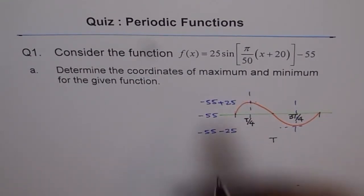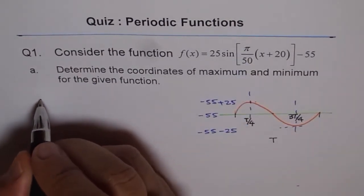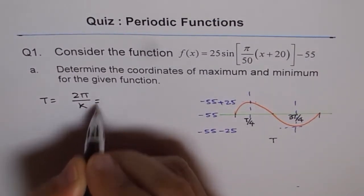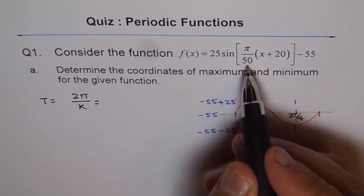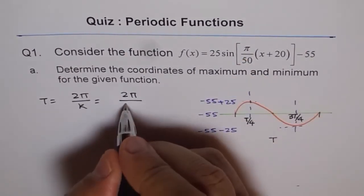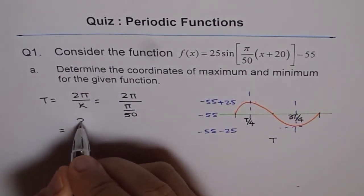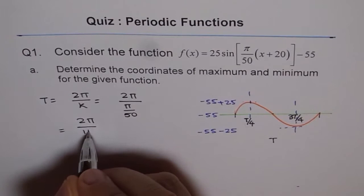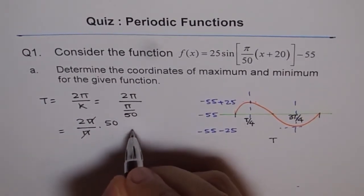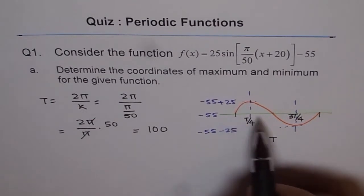Now, time period can be found from this horizontal compression or stretch factor. So time period T is actually equals to 2 pi by k. And k is pi over 50. Therefore, time period is 2 pi divided by pi over 50, which can be written as 2 pi over pi times 50. Now, pi and pi cancel out and we get time period of 100. So time period is actually 100.